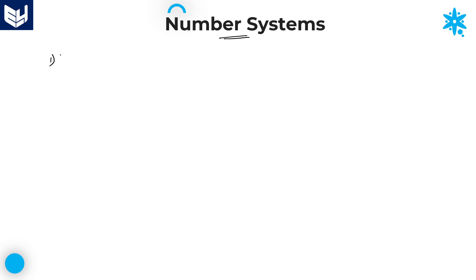First problem: what is the highest power of 6 in 100 factorial? If you observe carefully, the first and foremost point is to check whether this number is a prime number or not. 6 is not a prime number, so we need to convert this 6 into prime factors.